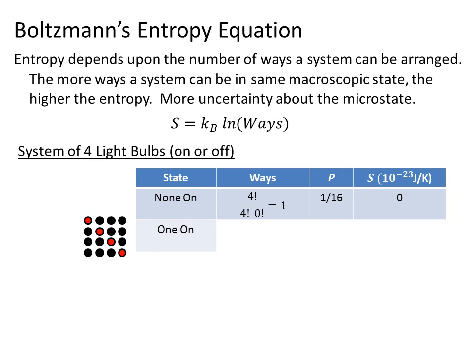When there's one on there are four possible states. Any one of the lights can be turned on when all the rest are off. So there's four possible ways. The probability then is 4 over 16 or 1 fourth and that gives us an entropy of 1.91 times 10 to the minus 23 joules per kelvin.